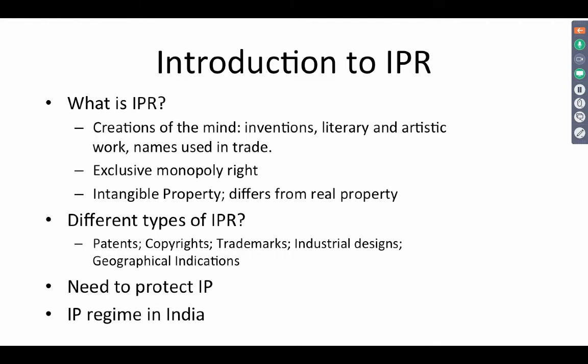Copyright covers expressions of ideas in literary, artistic, or recorded medium. A trademark covers the association of goods and services with the source of their origin — through the mark we get to know that a particular goods or service came from a particular company. Industrial designs help you protect designs which can be mass produced, and they cover the aesthetic part of designs, because the functional elements are usually covered by patents.